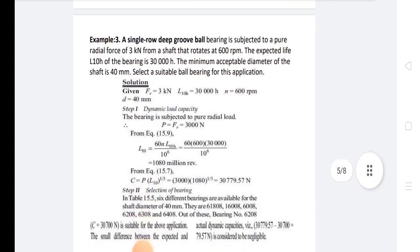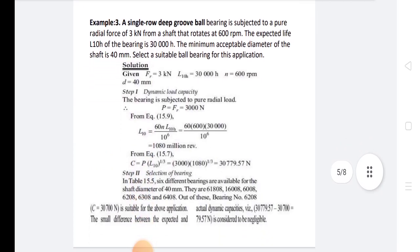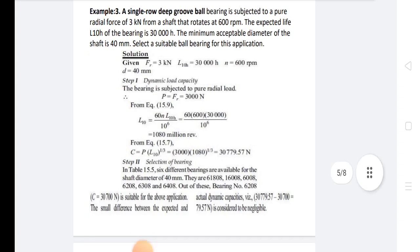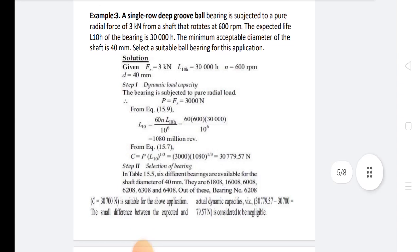Problem 1: A single row deep groove ball bearing is subjected to a radial force of 3 kN from a shaft that rotates at 600 rpm. The expected life L10h of the bearing is 30,000 hours. The minimum acceptable diameter of the shaft is 40 mm. Select a suitable ball bearing for this application. Given: Fr = 3 kN, L10h = 30,000 hours, n = 600 rpm, d = 40 mm.